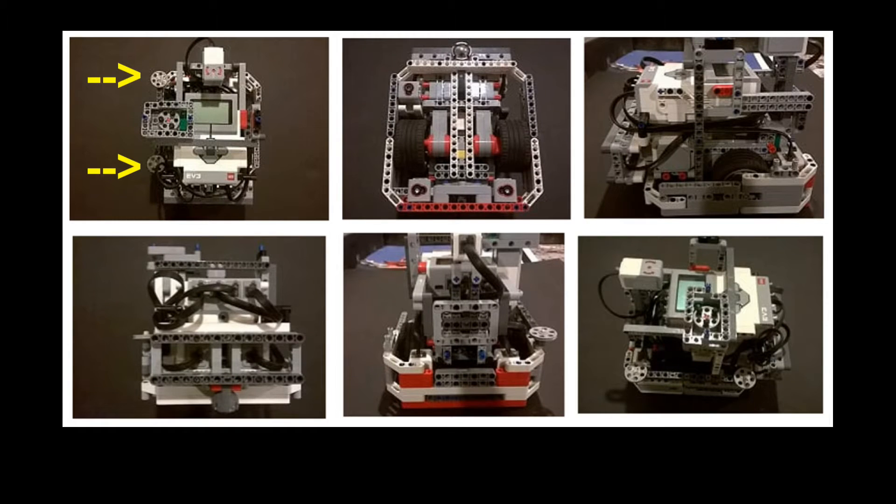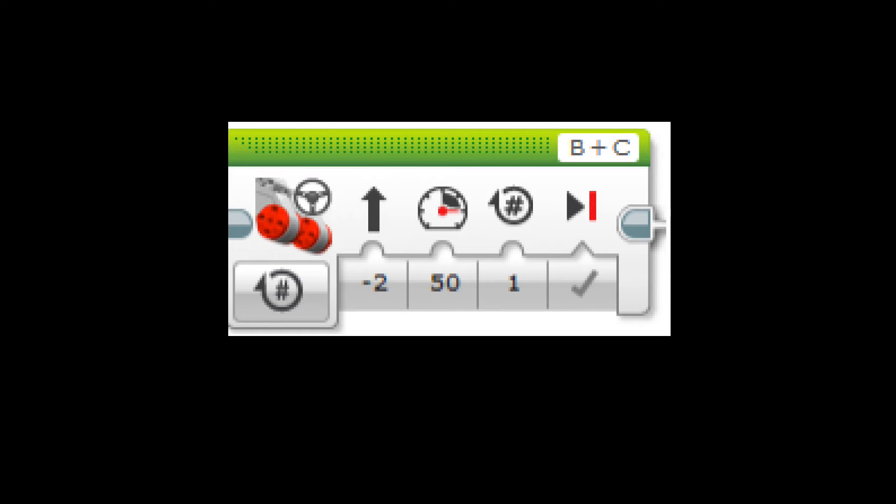Follow the wall: We install the wheel on the left side of the robot. We use a moving steering block and set negative 2 for steering to let the robot run against the left side of the wall.